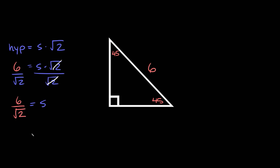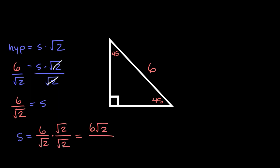Now we have a problem because we can't have a radical in the denominator, so we need to rationalize the denominator. That means we multiply by the square root of 2 on the top and on the bottom. Multiplying straight across: on top we get 6 times root 2, and on the bottom, square root of 2 times square root of 2 equals 2. Now we have 6 over 2, which reduces to 3, giving us 3 root 2 over 1 — or just 3√2. So one of the sides is equal to 3√2.